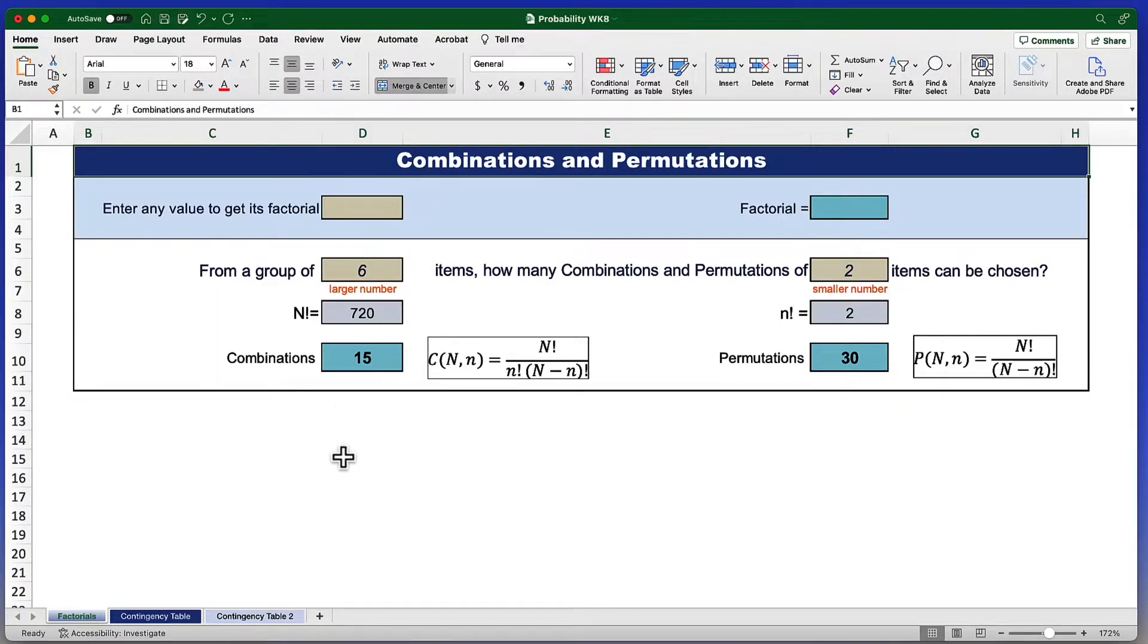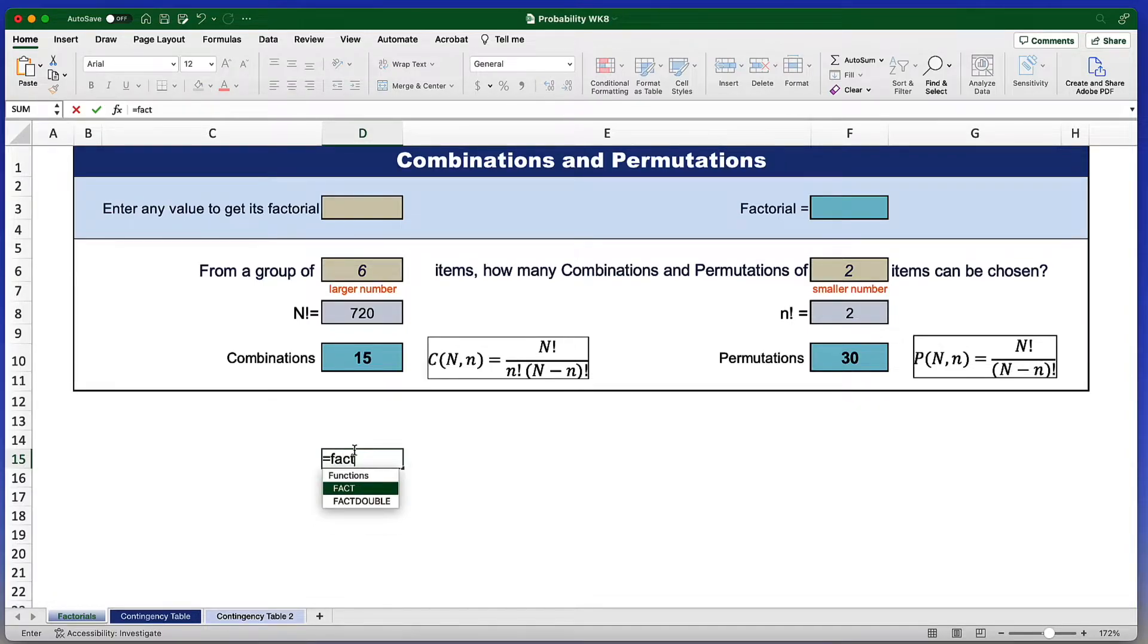To create a factorial, we use the formula FACT and then open parentheses. It requires only one argument, which is a number, so I'll just click on that number, close parentheses. There is my factorial.